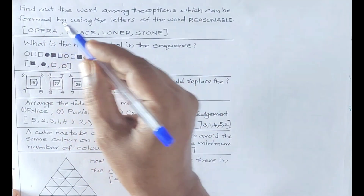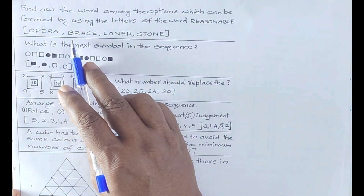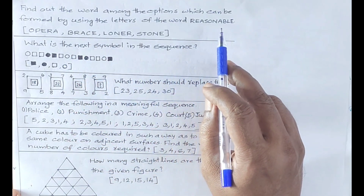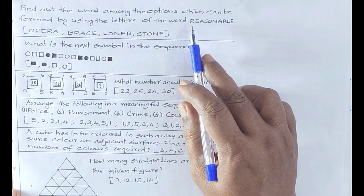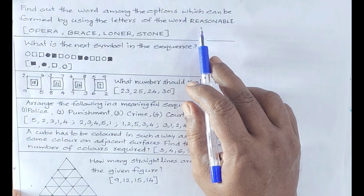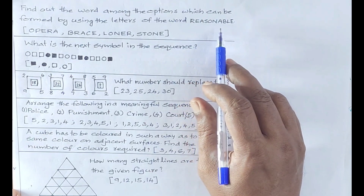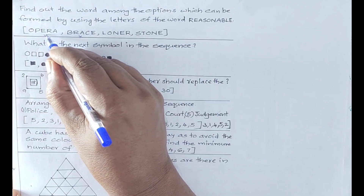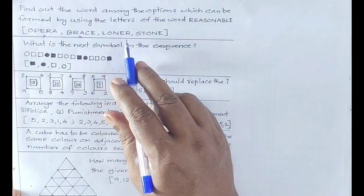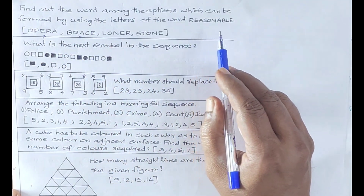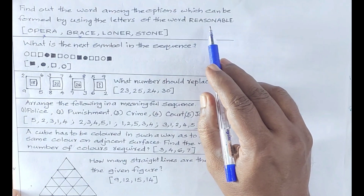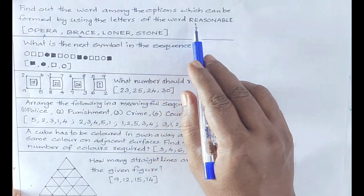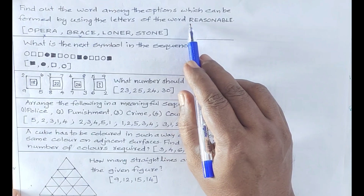E is not the case. Brace is B, R, A, C. B, R, A, C is not the case. So brace is not the case. It is not one of the cases. That is not one of the cases. So if you say P, that is the case.